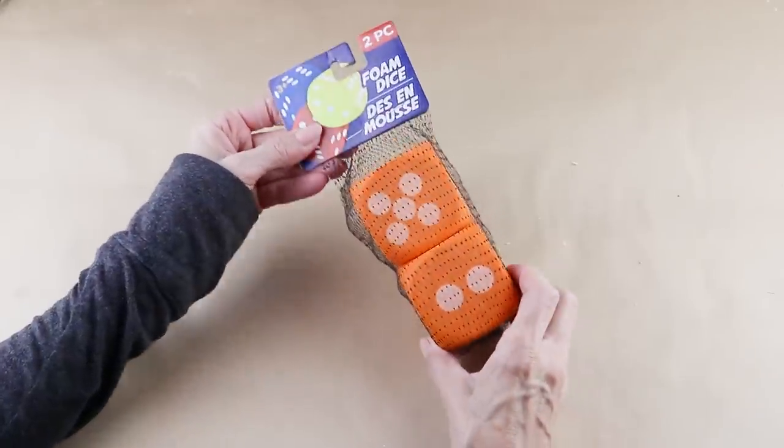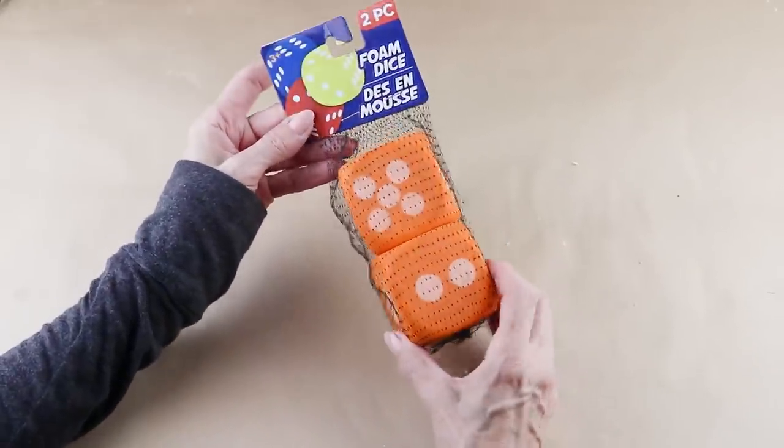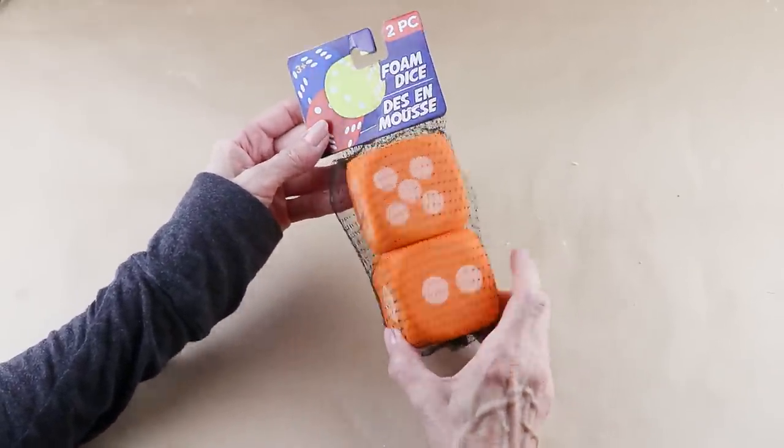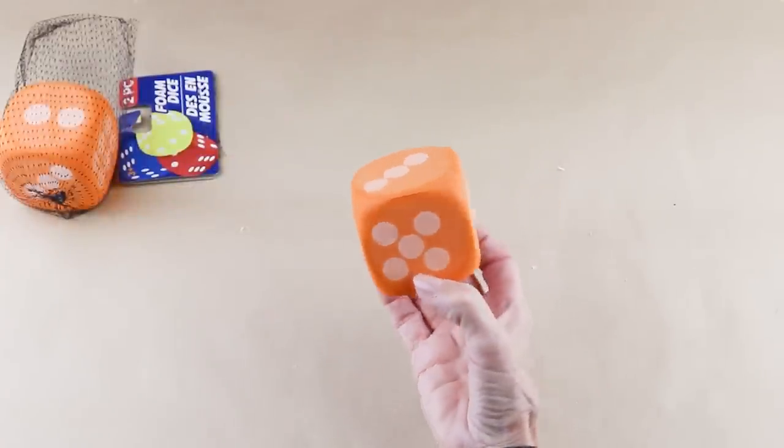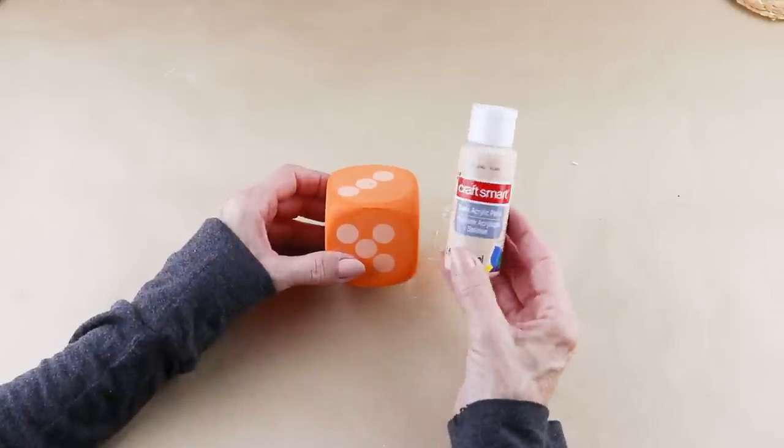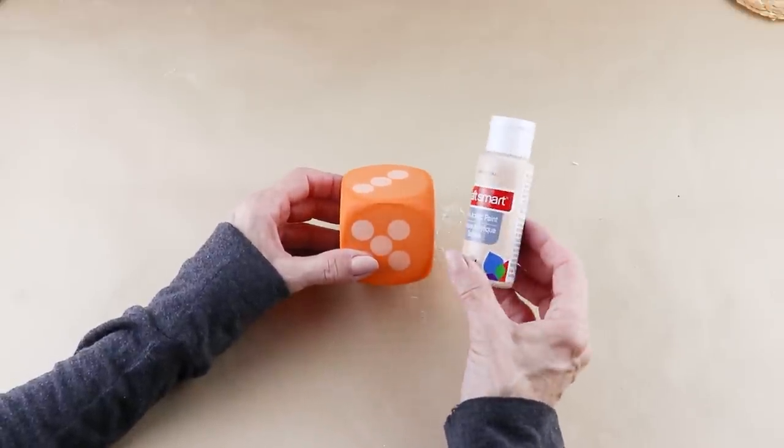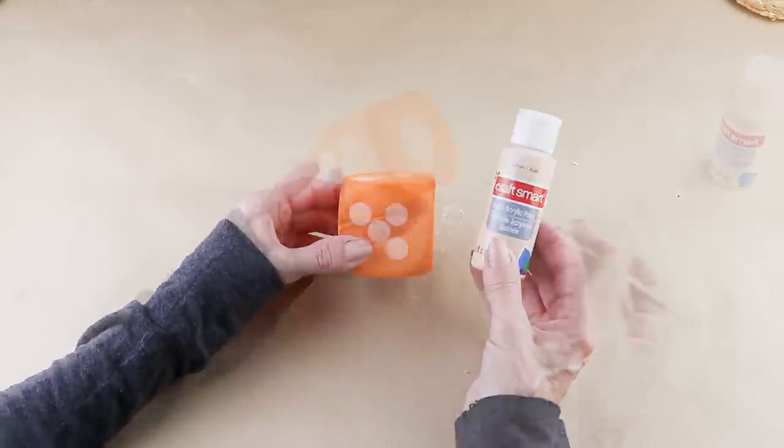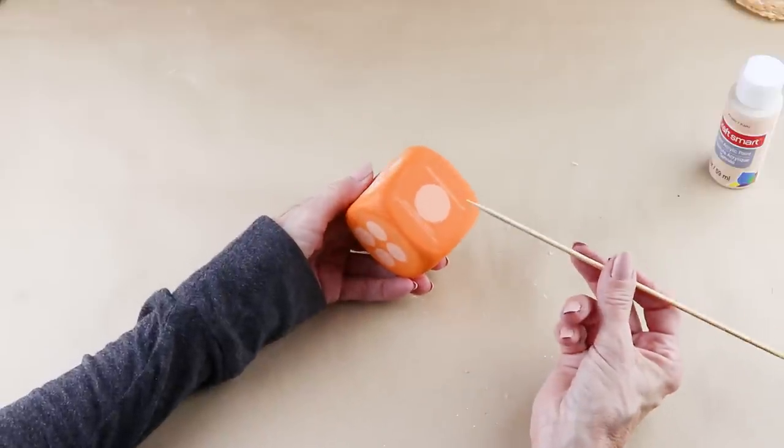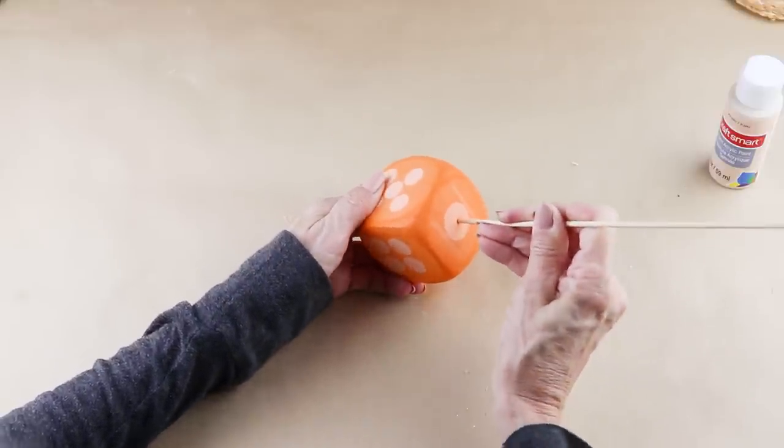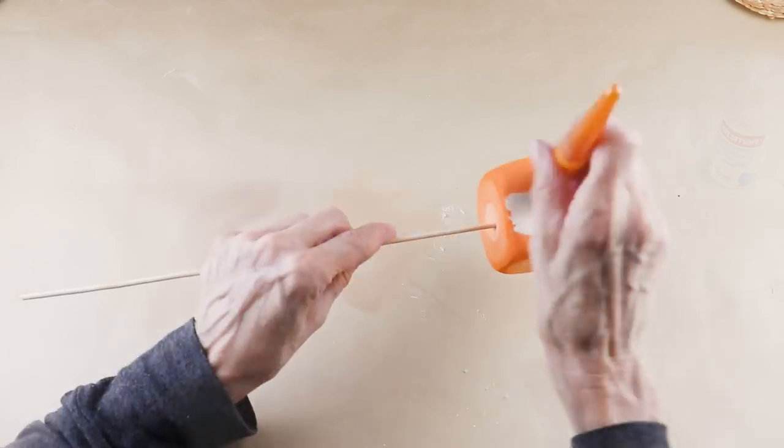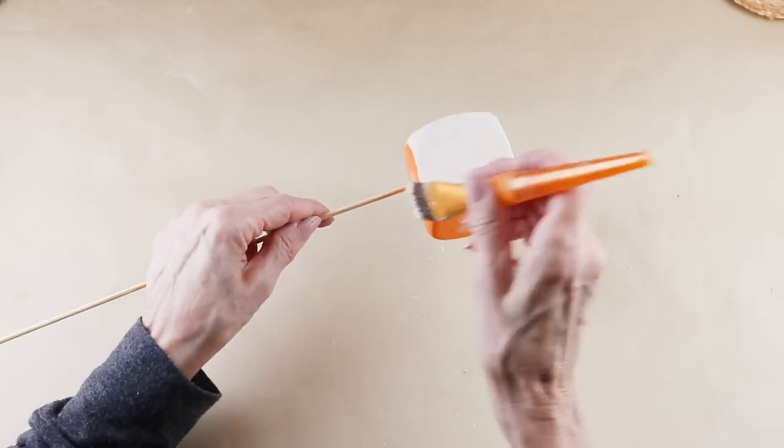I'm starting my mini scarecrow by using one of the foam dice from the Dollar Tree, and you can use any color that they have. It won't matter because we're going to be painting it. I'm using a khaki tan color, but choose any color you'd like. To make it easier to paint, I'm using one of the wooden skewers from the Dollar Tree and sticking it into the bottom. I'm giving it two complete coats.